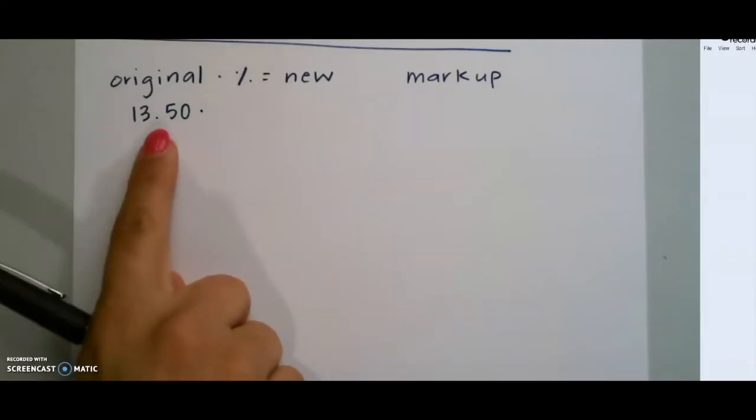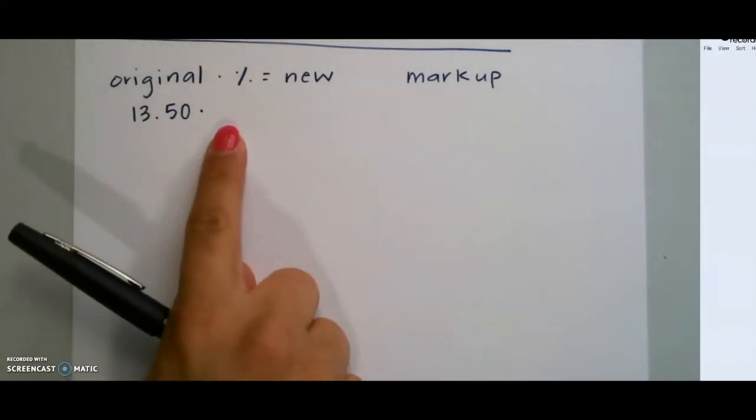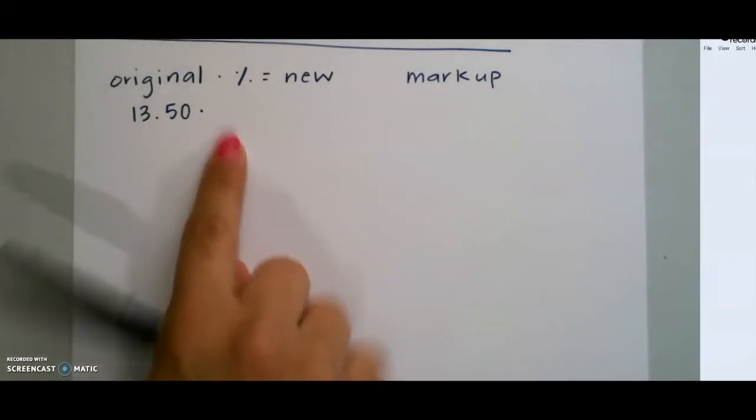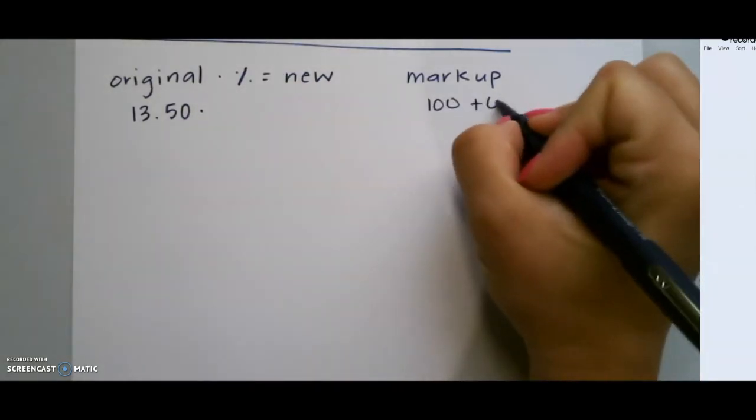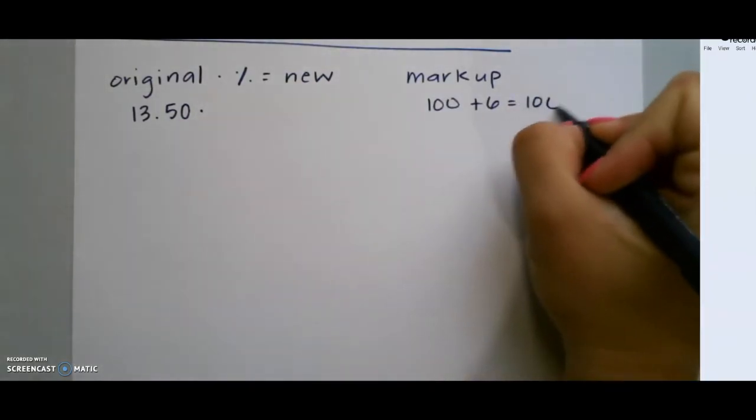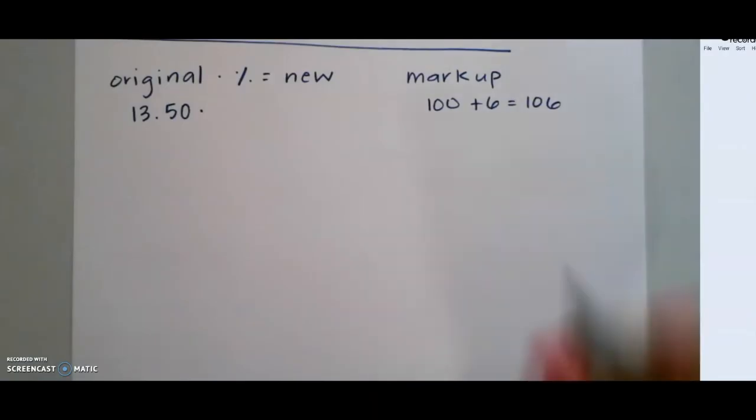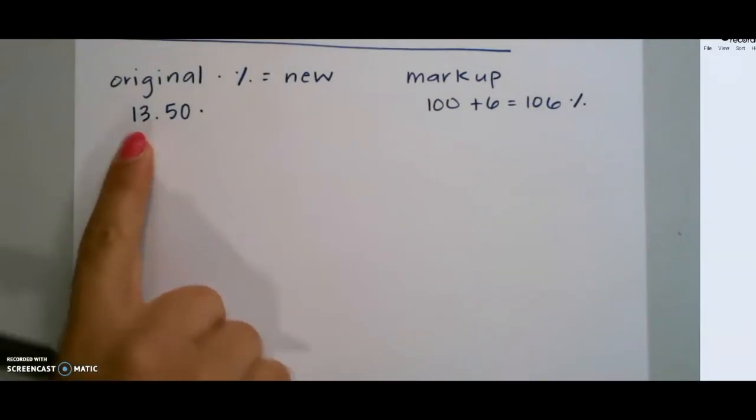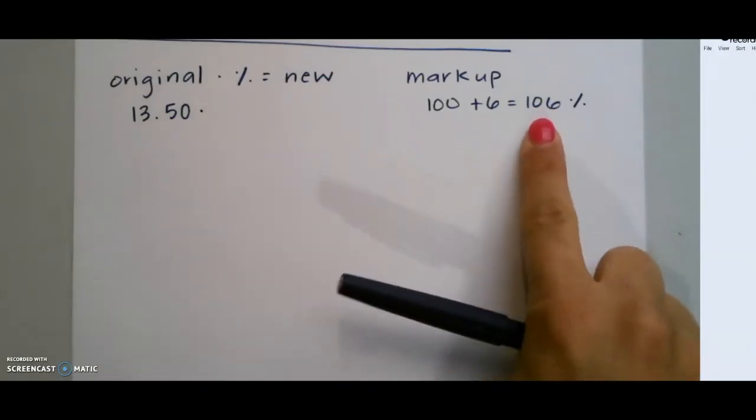So again, our original price is $13.50. We need to figure out what our percentage will be since it's a markup. So we're going to do 100% plus 6%, which will give me 106%, which means I'm paying 106% of this original price. I then need to make this into a decimal.